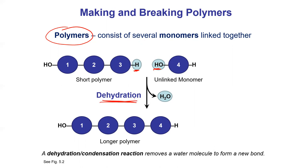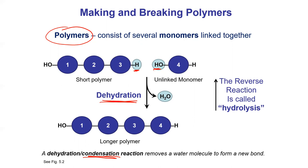Our textbook calls this a dehydration synthesis reaction — some textbooks call it a condensation reaction. I usually try to be consistent with the textbook, but if you've heard the other terminology, that is fine and totally acceptable. The last thing I want to say about this slide is that you can actually do the reverse reaction — where a water molecule is added to that bond and breaks the bond. It's called hydrolysis. Hydro means water and lysis means breaking. So a hydrolysis reaction is a breaking reaction. Dehydration synthesis attaches things together; hydrolysis breaks things apart. You'll see these reactions a few times in this unit where we're linking things together.